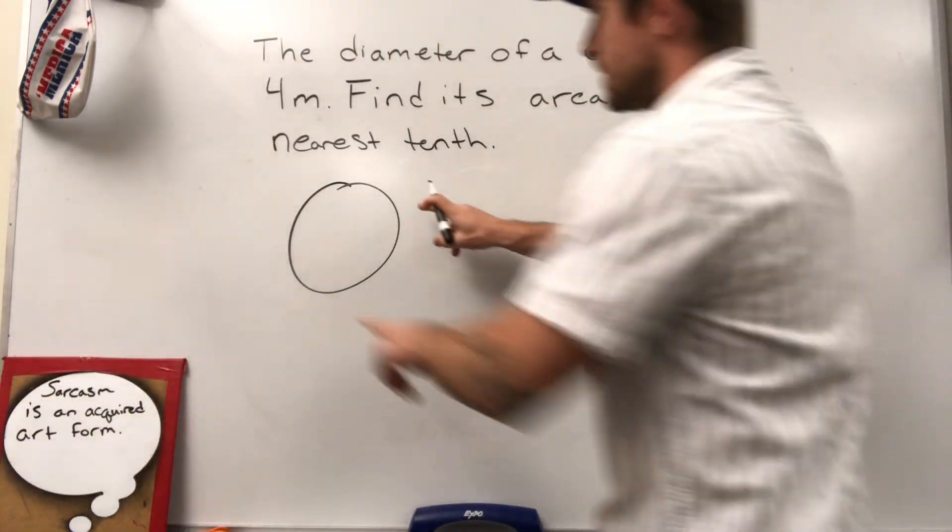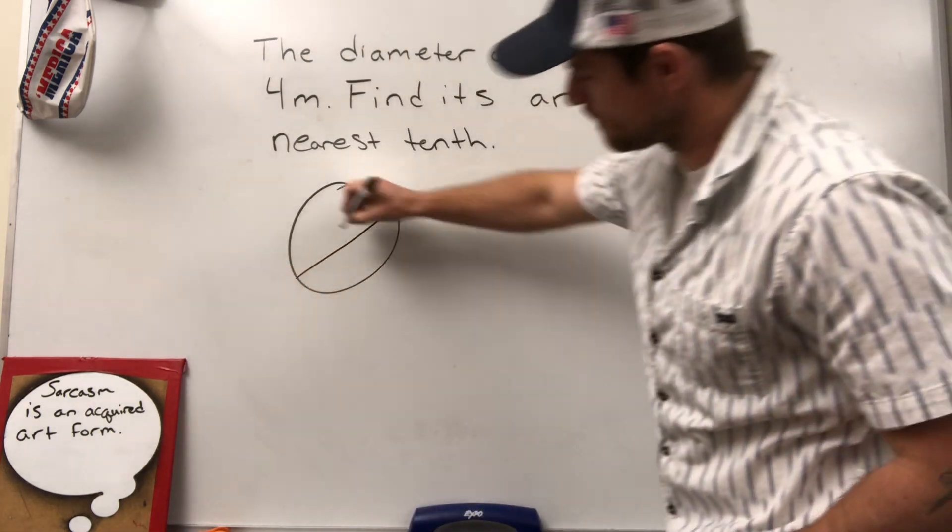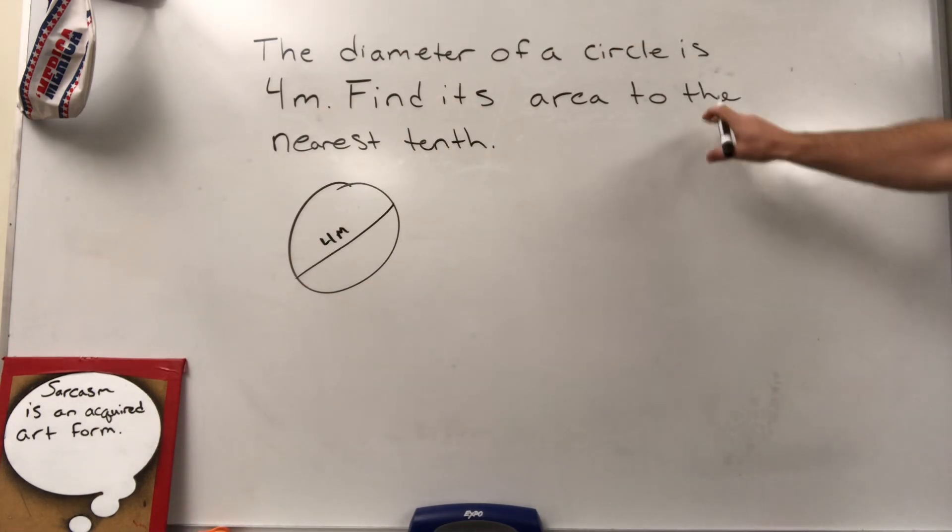The diameter going from one side to the other edge, all the way across the circle, four meters. Label it. Find its area.